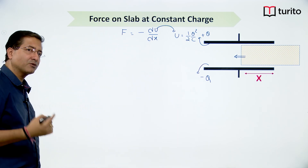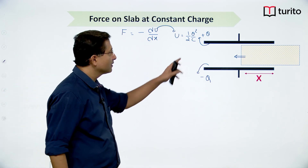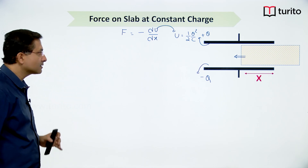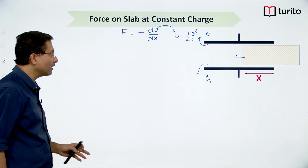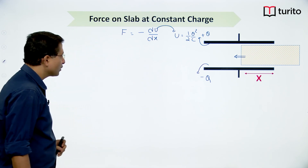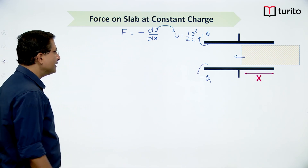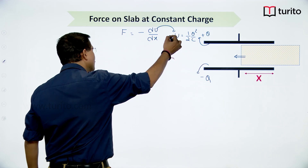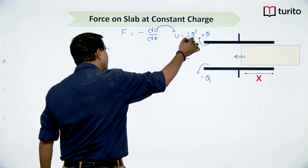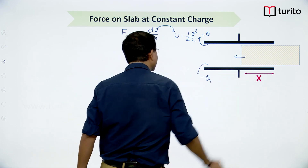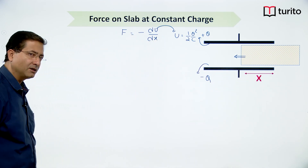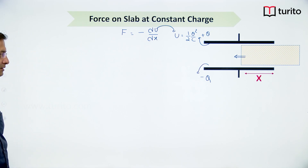In the previous case potential was constant, so I applied U = ½CV². In this case charge is constant, so we apply U = ½q²/C. Now I need to differentiate this function where charge is constant and capacitance varies with x, so ultimately I need to differentiate 1/C with respect to x.